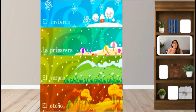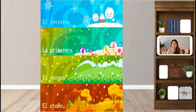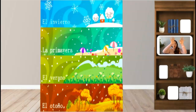El invierno. La primavera — this is to show maybe the blooming flowers. La primavera. El verano. Y el otoño. Esas son las cuatro estaciones. Those are our four seasons.